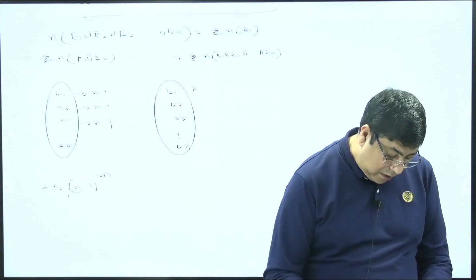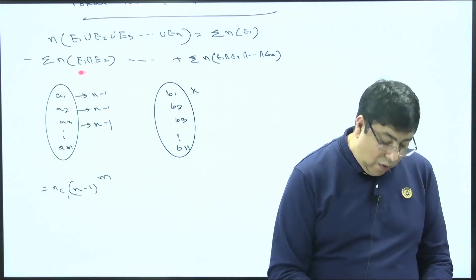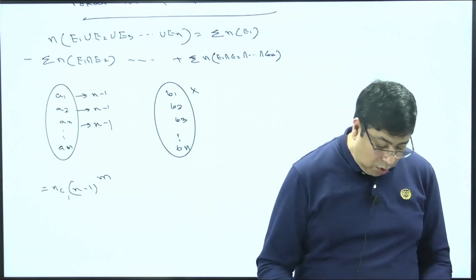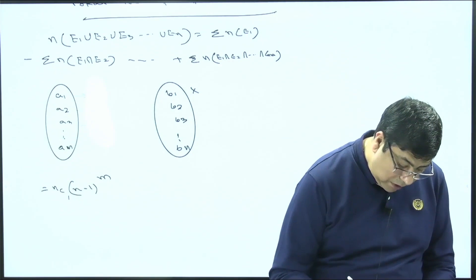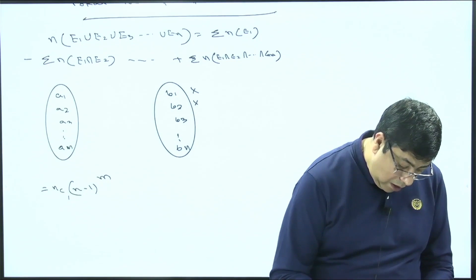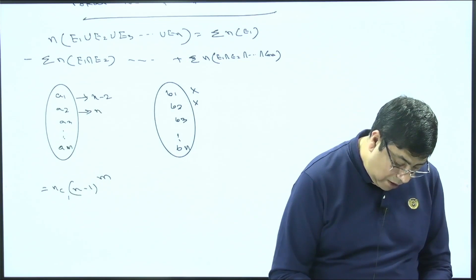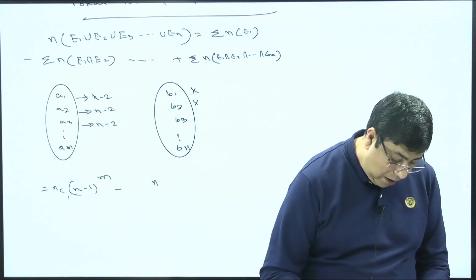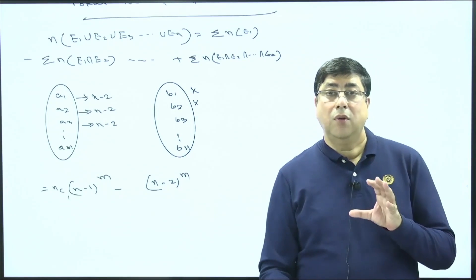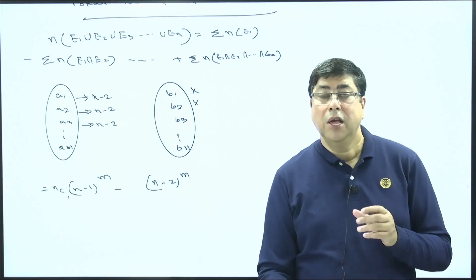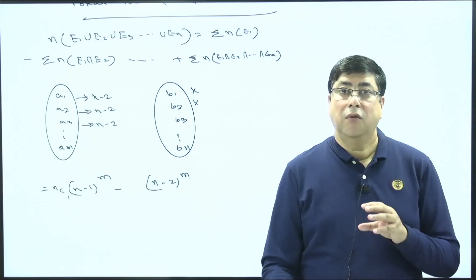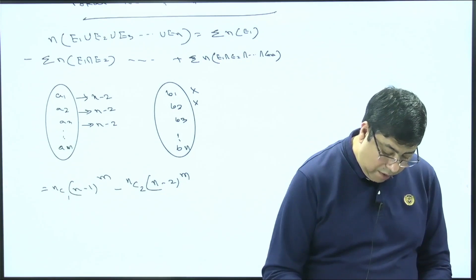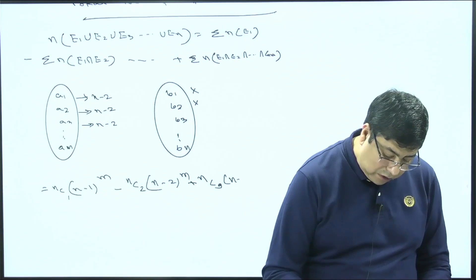For the second case (E1 ∩ E2), both B1 and B2 are missing, so each element of A has (n−2) choices, giving (n−2)^m functions. We choose 2 elements to be missing from n, so this term is nC2·(n−2)^m. Similarly, for three elements missing: nC3·(n−3)^m, and so on.